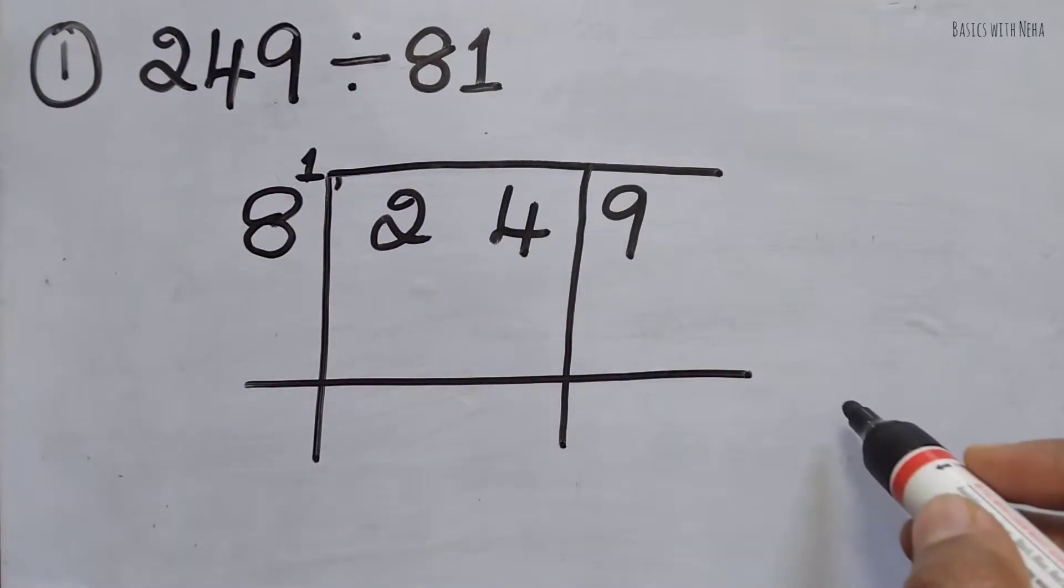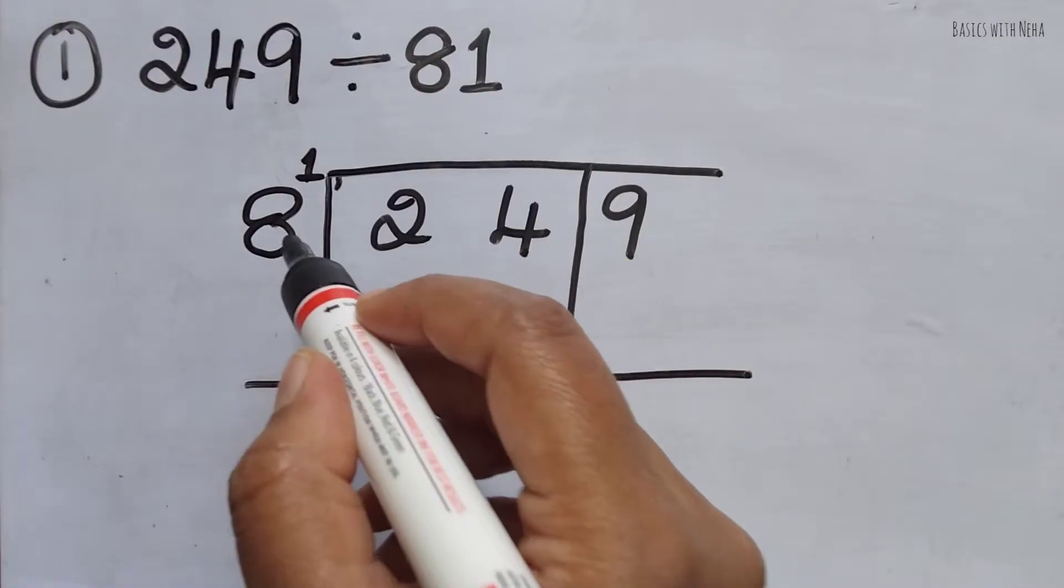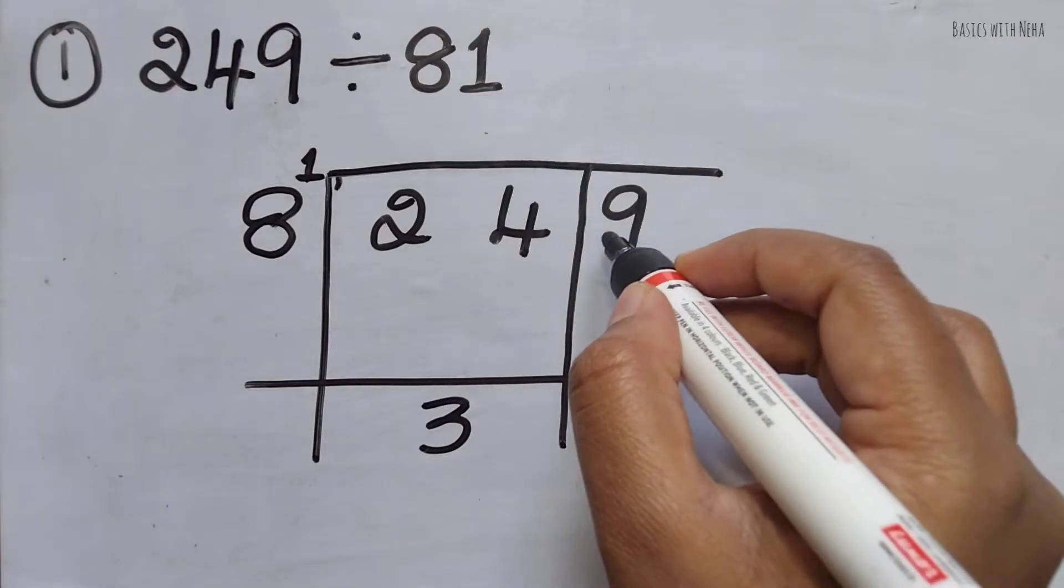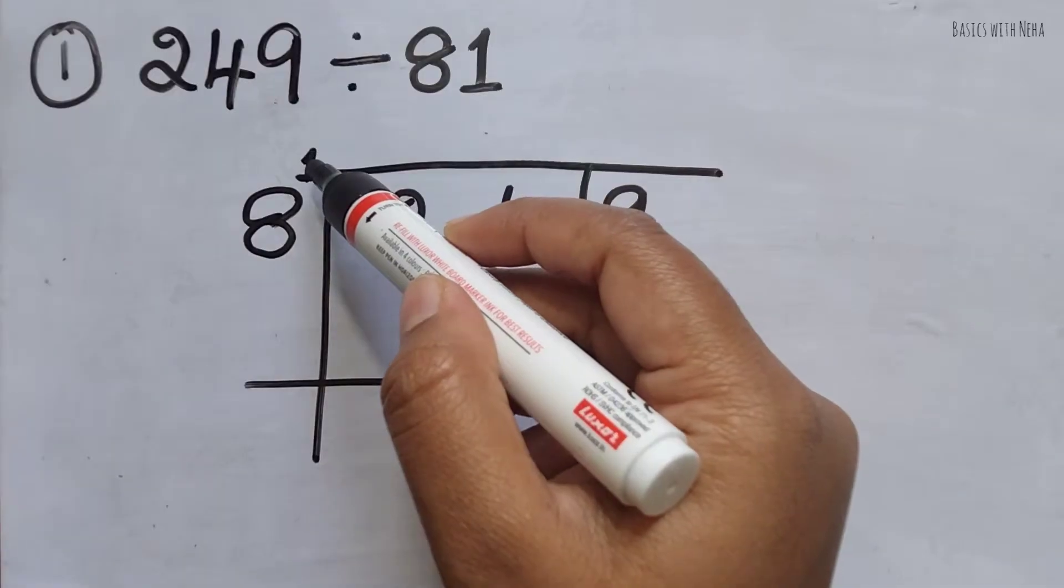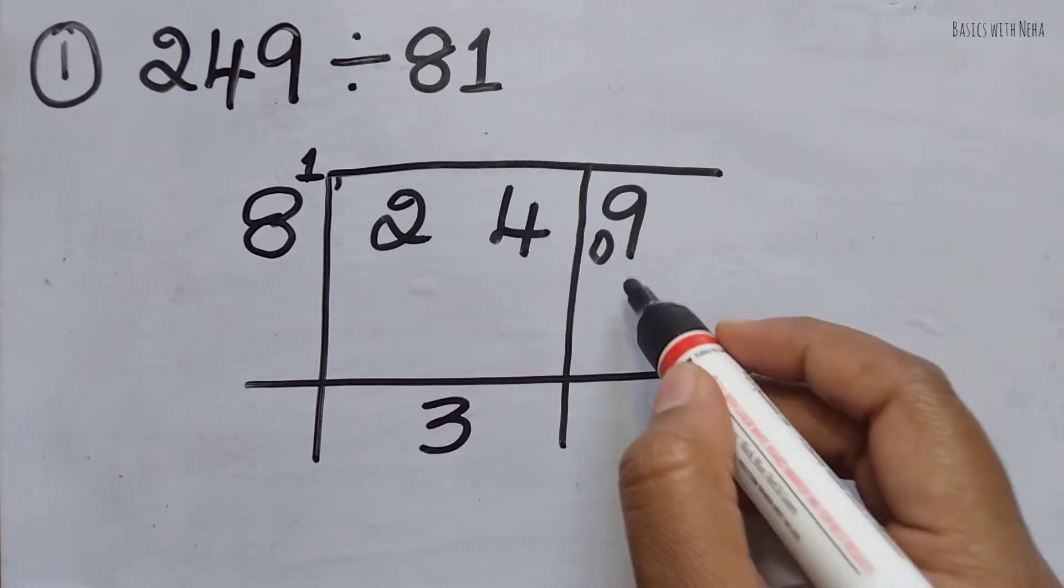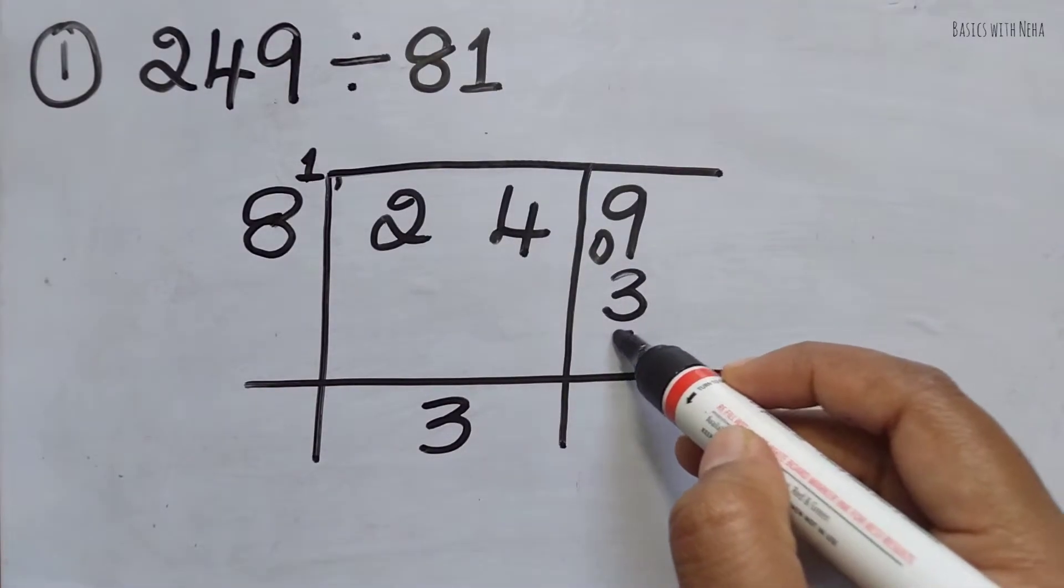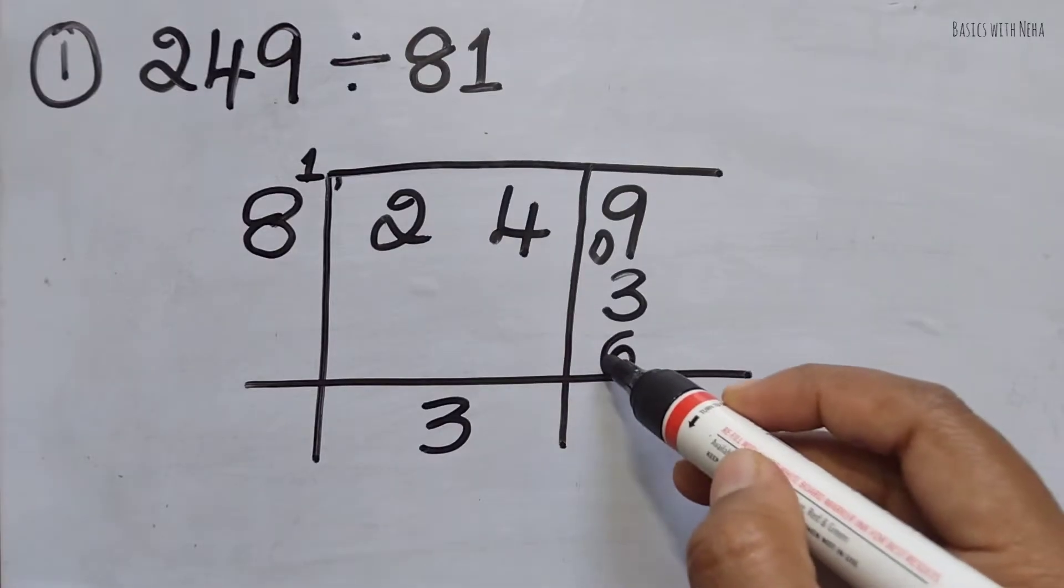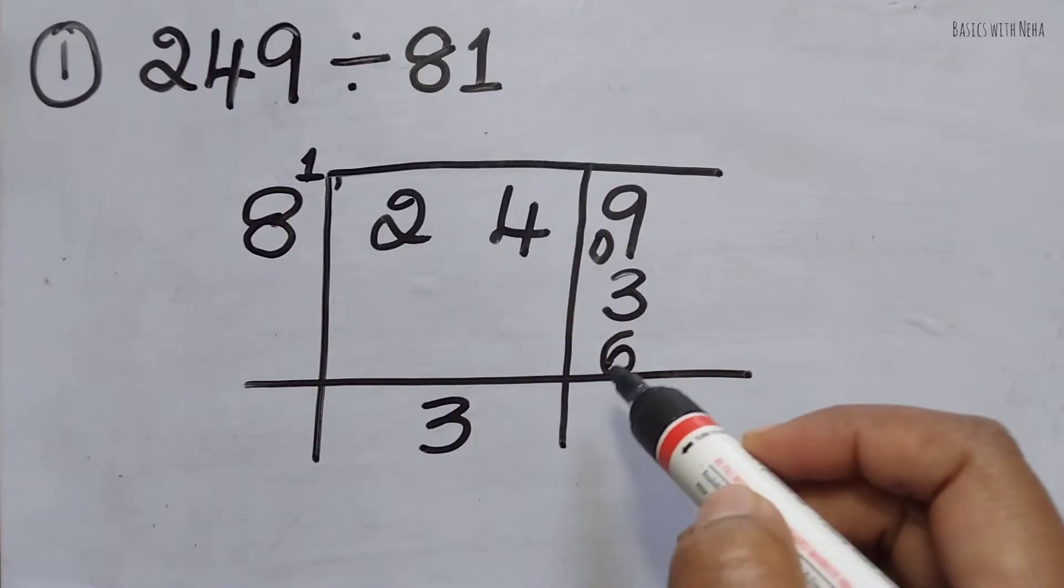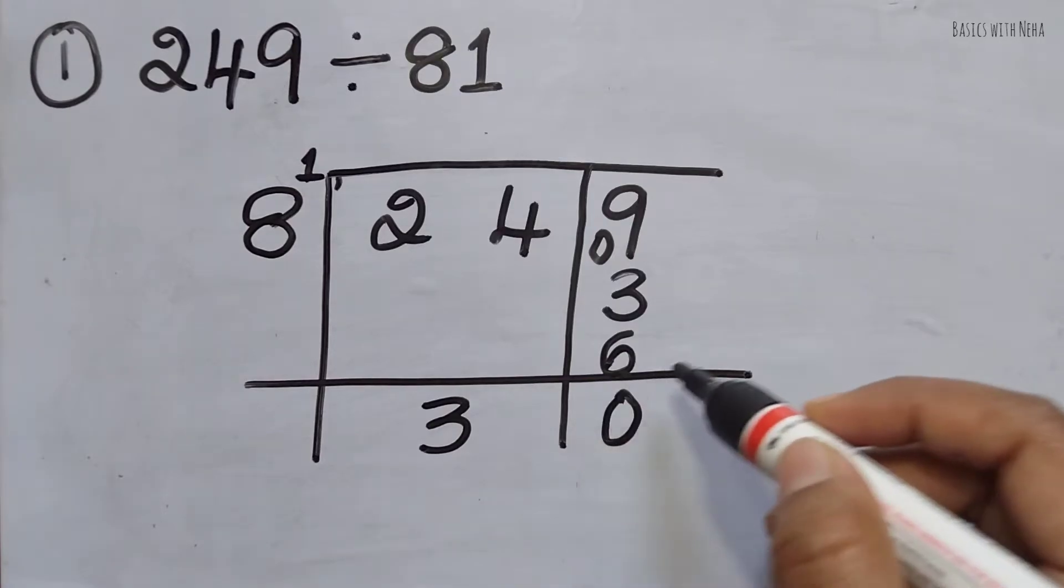Now let's start solving. 8 goes into 24 how many times? 8 times 3 is 24. The remainder left will be 0. Now with this Dvajanka, I have to multiply this quotient: 3 times 1 is 3. I'm going to take 3 and minus this: 9 minus 3 is 6. Now this is the new dividend. When I divide 6 by 8, 8 times 0 is 0 and the remainder will be 6.